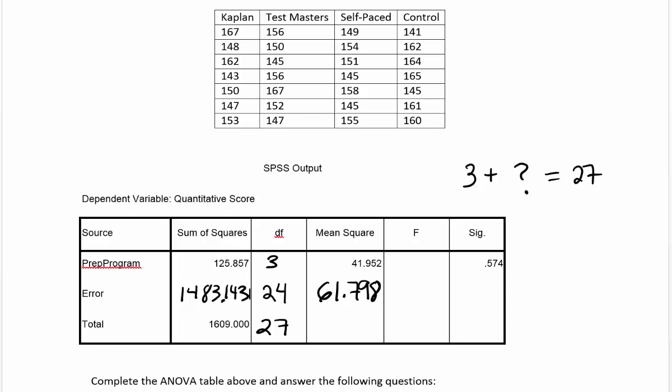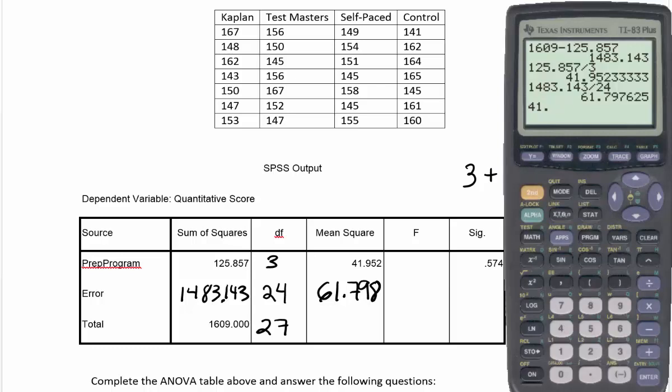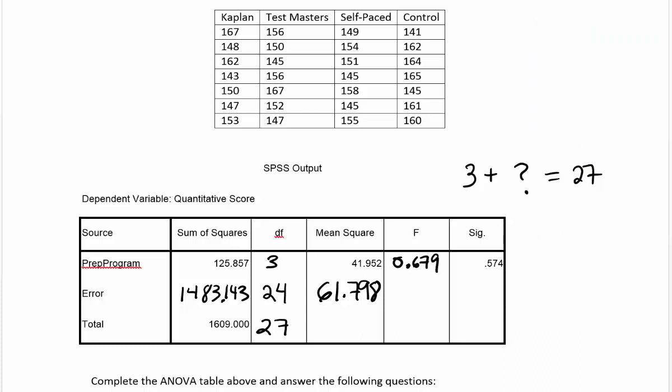There is no mean square for total. The F is the test stat in this table, and we need to determine what this quantity is. We take the mean square error and divide it into the mean square for treatments, and that will produce our F test stat. We're going to take 41.952 and divide that by 61.797. When you calculate that, you get 0.679. That's your F test stat.